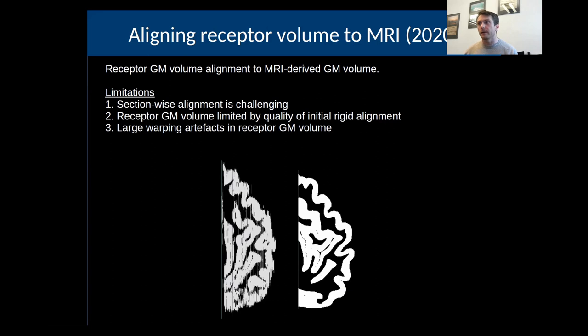Now, this has a lot of limitations. Most notably, as you can see, the initial receptor gray matter volume is not very good. It's not smooth. This poses the question of how on earth are you ever going to be able to align this to the MRI at a high resolution when you have all this jagged noise.